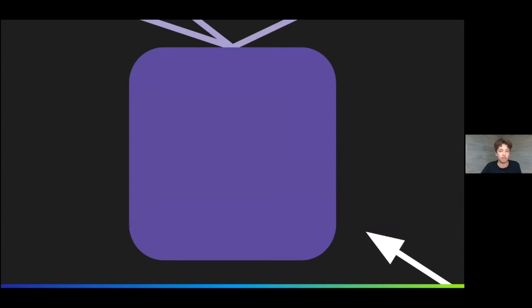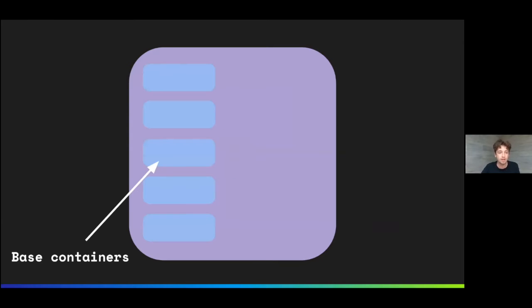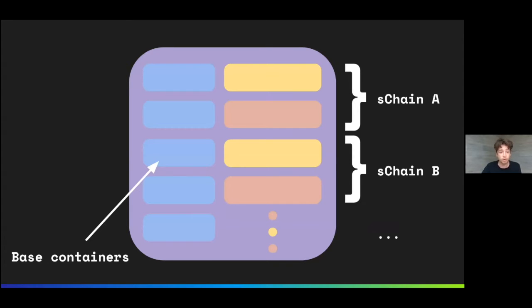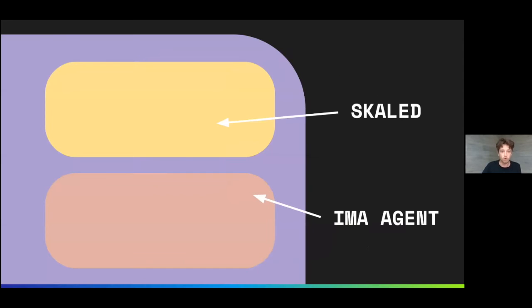Let's take a closer look at a SKALE node and what's inside. Inside a SKALE node, we have a set of base containers that manage the machine, such as SKALE admin, SLA, etc. We also have dynamic containers for each SKALE chain assigned to the node. For each S-chain we have two containers: SKALE D and IMA.